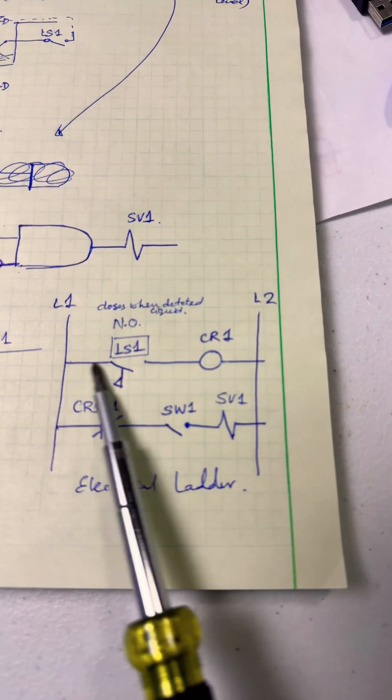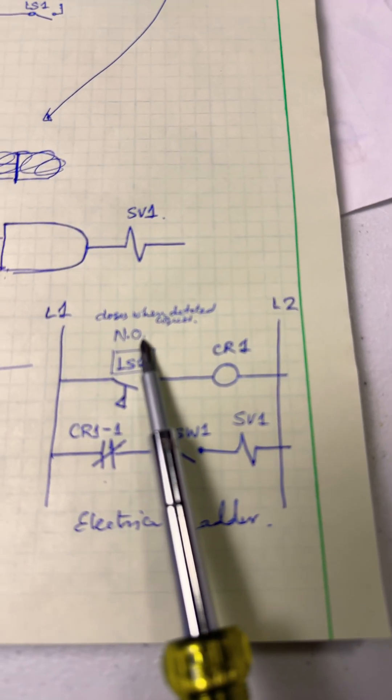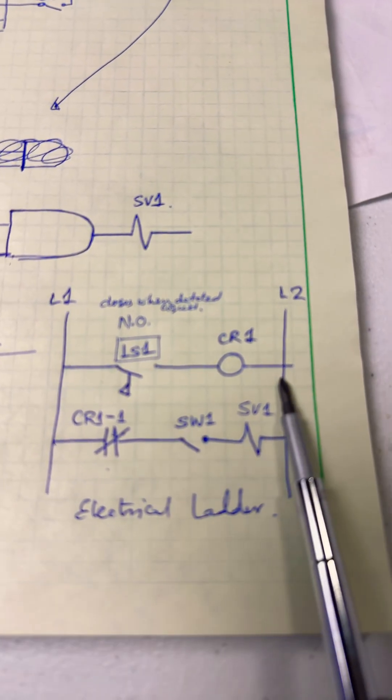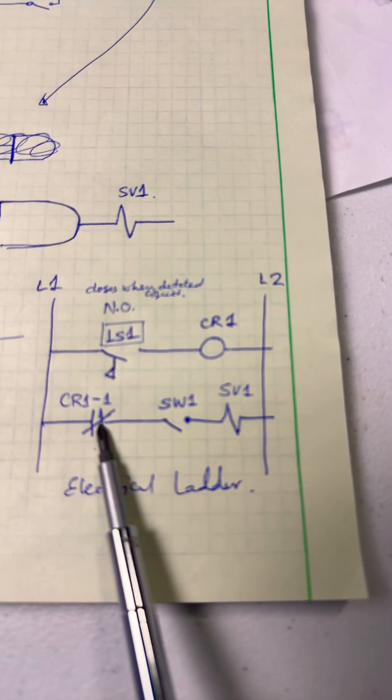And here is where the circuit comes in. When the liquid level switch, which is normally open and closes when the liquid is detected, we turn on a control relay CR1 and use the normally closed contact of the control relay.